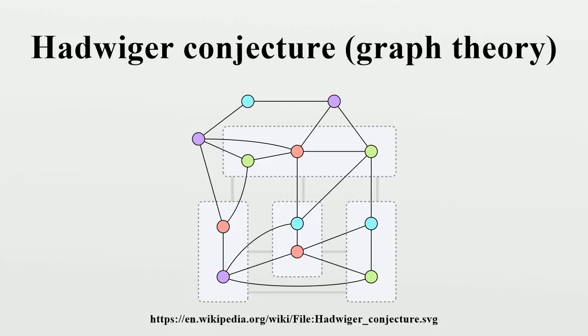In graph theory, the Hadwiger conjecture states that if all proper colorings of an undirected graph G use K or more colors, then one can find K disjoint connected subgraphs of G such that each subgraph is connected by an edge to each other subgraph.